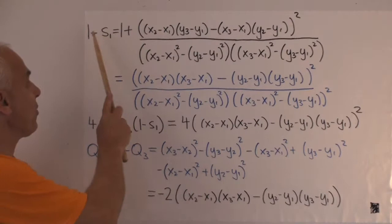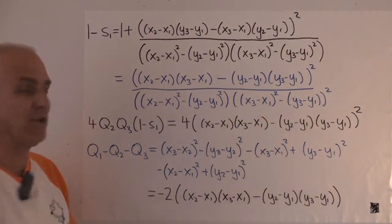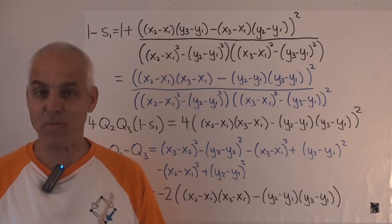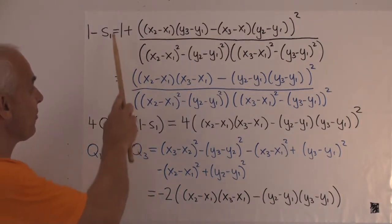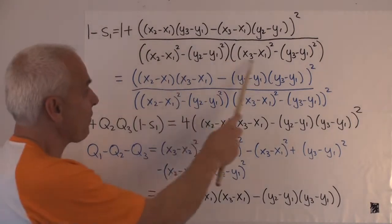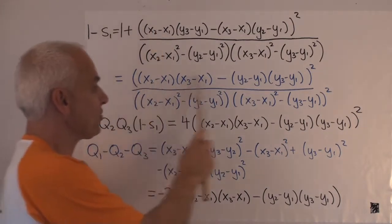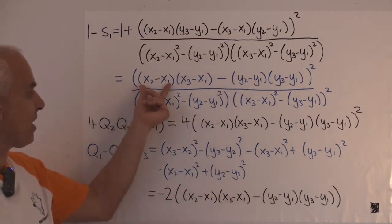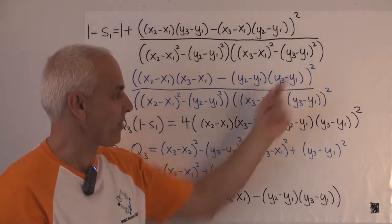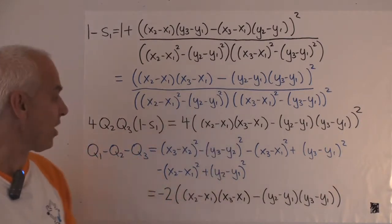All right. I've started by writing 1 minus S1. So we have 1 plus that expression that we had on the previous page. And now I want to invoke that identity that I told you about last time that I said was important that we can rewrite this using a Fibonacci type identity by taking everything over the common denominator. This is the common denominator, putting it up there, and then rearranging the numerator to realize that it can be written this way as X2 minus X1 times X3 minus X1 minus Y2 minus Y1, Y3 minus Y1, all squared.